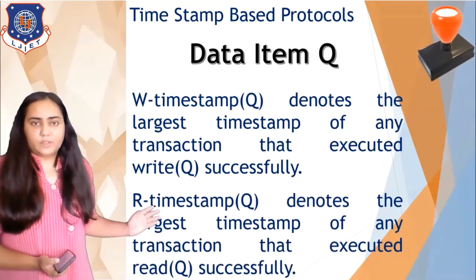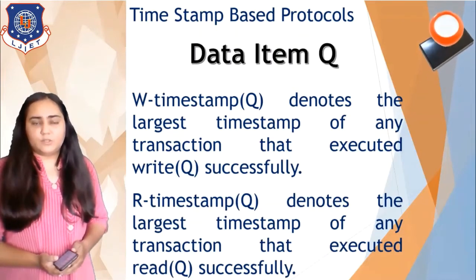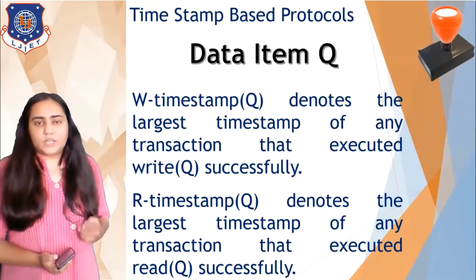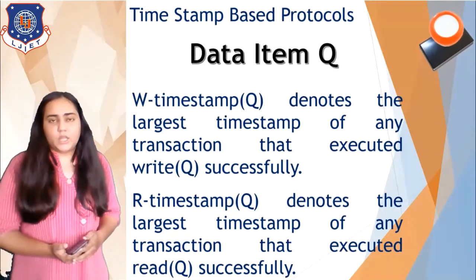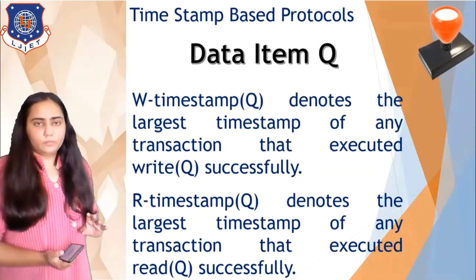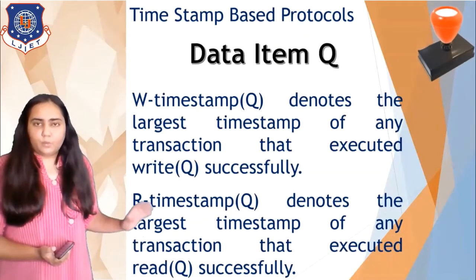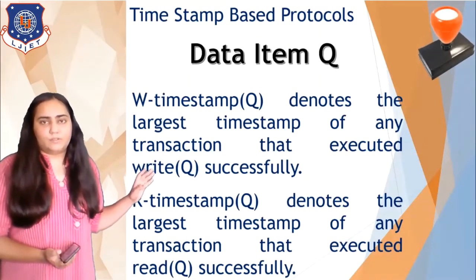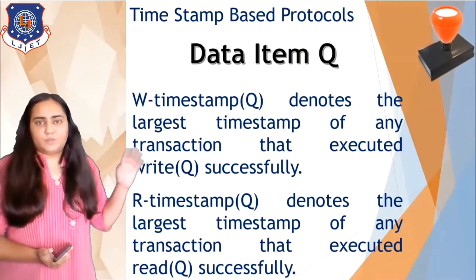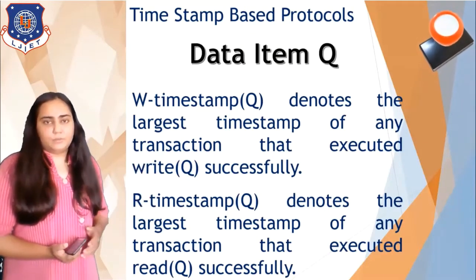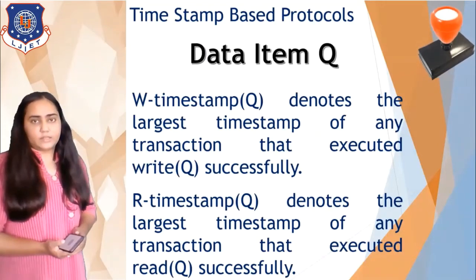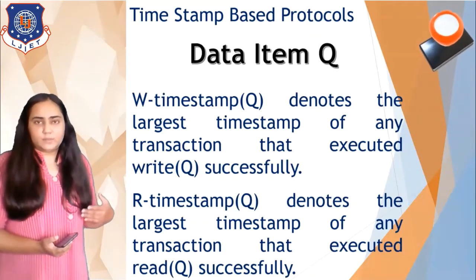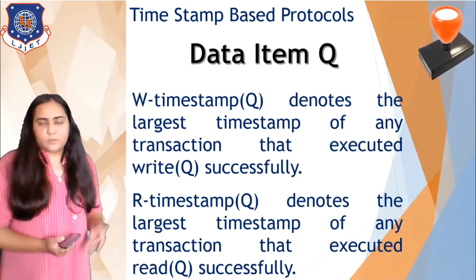The other timestamp is the R-timestamp, which is the read timestamp — the largest timestamp of any transaction that executed a read(Q) successfully. So if five transactions with timestamps one through five all read data item Q, then Q will end up with a read timestamp of five. That's how we assign timestamps to transactions and data items.